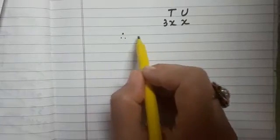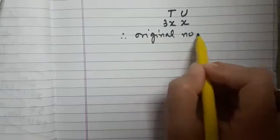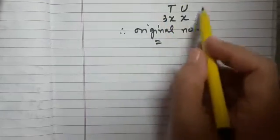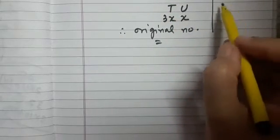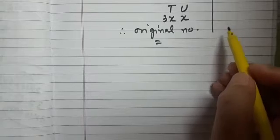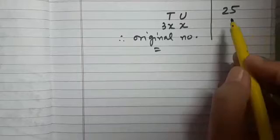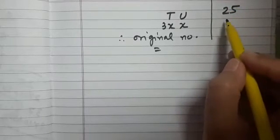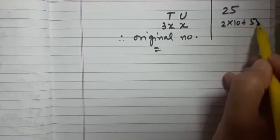Therefore original number will be equal to—you know how to express a two-digit number. I hope you have watched the example which I gave in the previous video. So if I have to take a number like 25, it is a two-digit number. How do we write it? 2 into 10 plus 5 into 1. This is how we express it. This is the expansion.